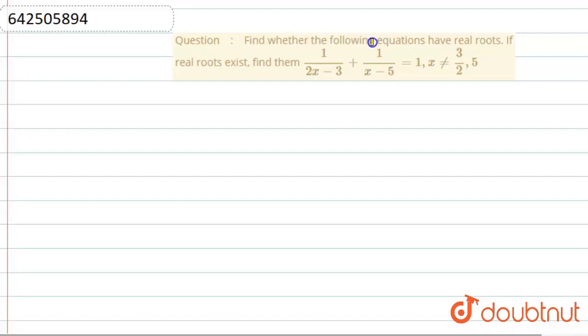In this question, find whether the following equation has real roots, and if the real roots exist, then find them. The given equation is 1 upon 2x minus 3 plus 1 upon x minus 5 equal to 1.